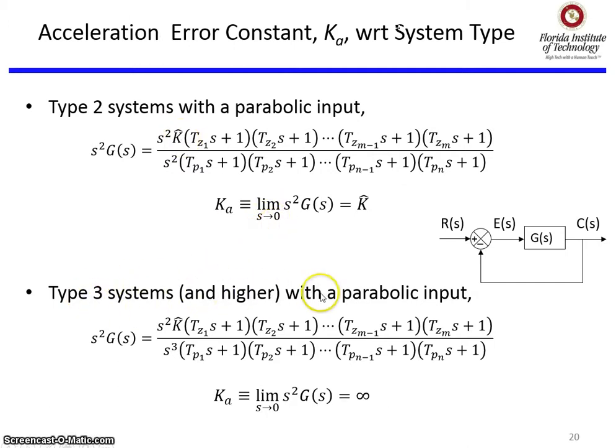Type 3 systems and higher with a parabolic input. I'm going to get three or more s's, three s's in the denominator, which means this guy's going to cancel out, and there'll be at least one of these guys left over, so that when I run s equals to zero in the limit, I'm going to get zero in the denominator, and Ka is going to be infinity.